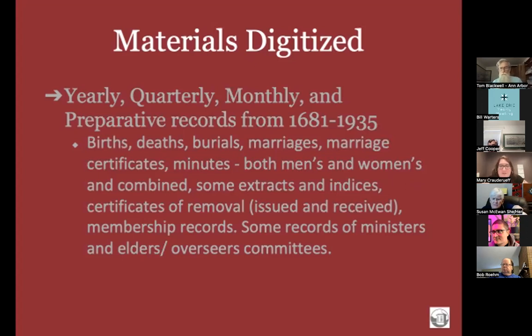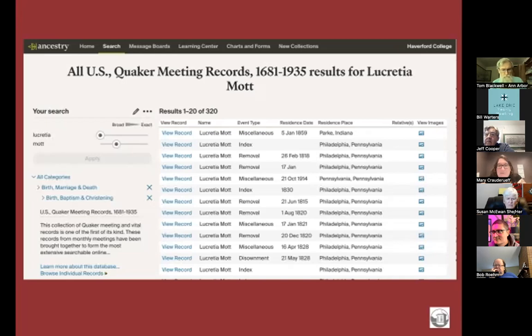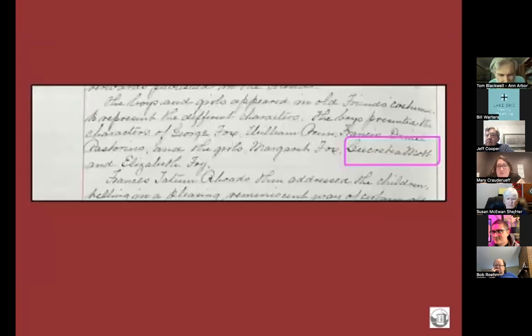Relying solely on name searches is also not perfect, since not every single name is transcribed every time. As an example, searching for Lucretia Mott in this database returns 320 results. Since she died in 1880, why does a record from 1914 appear? It turns out that Germantown Monthly Meeting had a children's tea meeting in 1914 where children dressed up as George Fox, William Penn, Francis Daniel Pastorius, Margaret Fell Fox, Lucretia Mott, and Elizabeth Fry. The lesson is that context is key — you really have to look at everything.